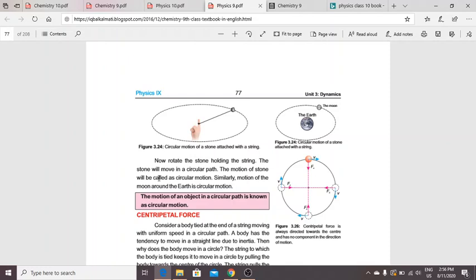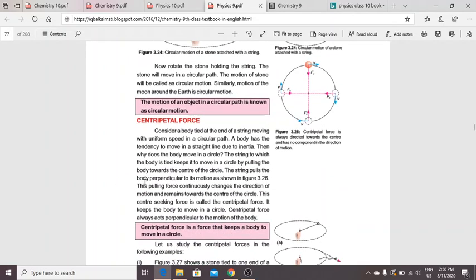Our next topic is centripetal force. Consider a body that is tied at the end of a string, moving with uniform speed in a circular path. The body has a tendency to move in a straight line due to inertia. So why does the body move in a circular path? The string that ties the body